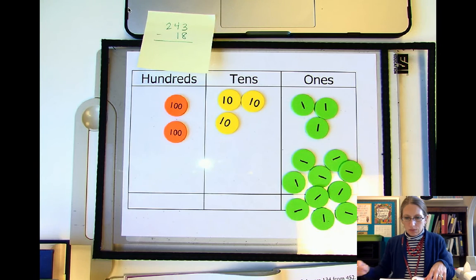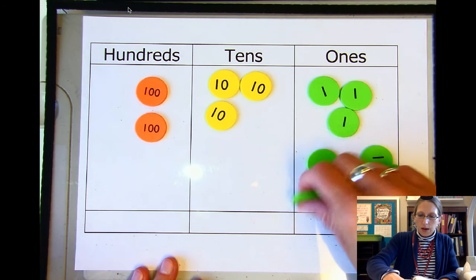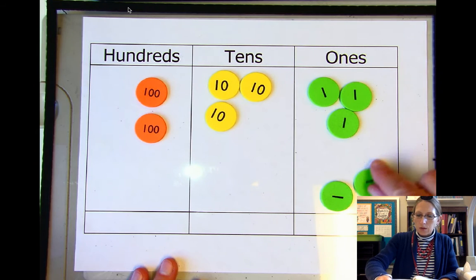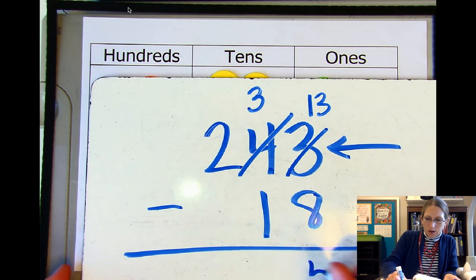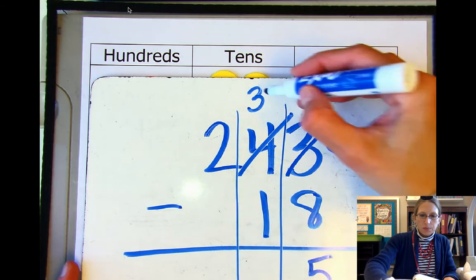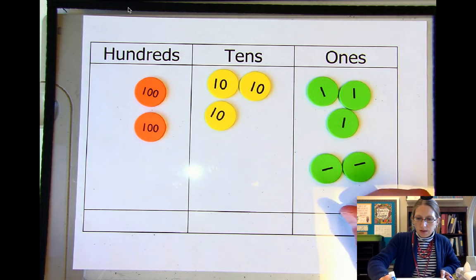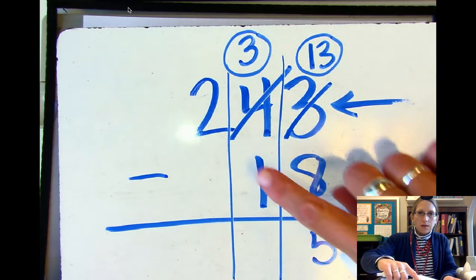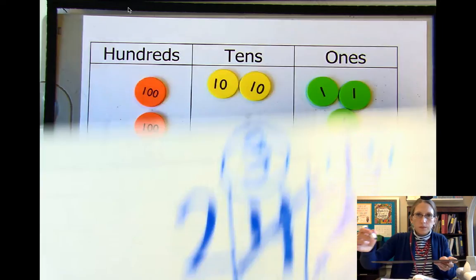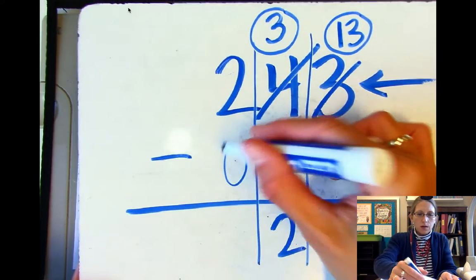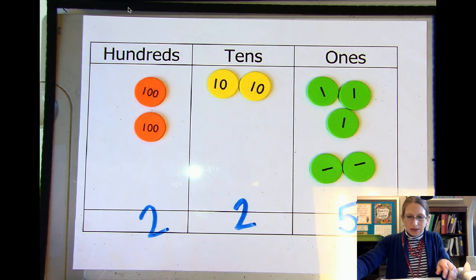So we've subtracted eight: 13 minus eight is five. I should draw my lines to separate and circle my renaming. Three tens minus one ten is two tens — we take away a ten. And then two hundreds minus nothing is two hundreds. So that is how we do our subtracting with renaming.